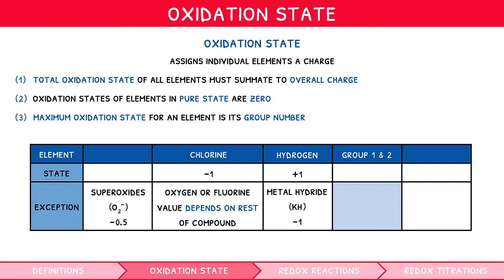Chlorine has an oxidation state of −1, except in compounds with oxygen or fluorine, where its value depends on the rest of the compound. Group 1 and 2 metals have an oxidation state of their group number, i.e. +1 or +2. Transition group elements have variable oxidation states, indicated by Roman numerals. For example, iron can have an oxidation state of +2 or +3, indicated by Fe(II) and Fe(III) respectively.